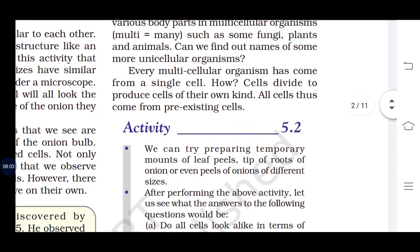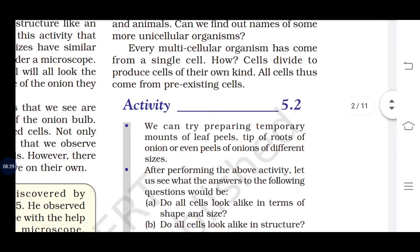Every multicellular organism has come from a single cell. Cells divide to produce cells of their own kind — that is why multicellular organisms are said to come from single cells. All cells come from pre-existing cells.